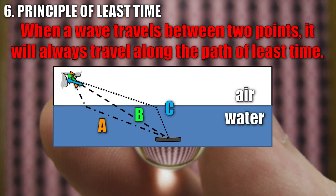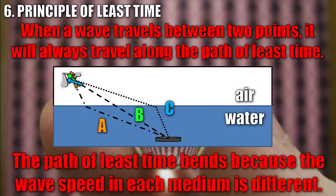So path C is actually the least time, even though it has a greater distance than path B. Path C is the path of least time because the light was able to emerge from the water sooner and then travel quickly through the air and reach the eye. So this is why refraction occurs. It's because the path of least time bends since the wave speed in each medium is different. Refraction only occurs when the medium changes because it requires a change in speed which then optimizes the path into this bent shape.